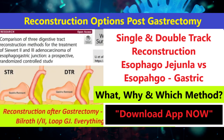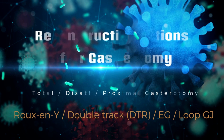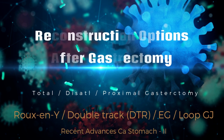In today's video tutorial, we have discussed in detail about different reconstruction methods after gastrectomy. The main reconstruction techniques discussed are Roux-en-Y type reconstruction, esophagogastrostomy, and loop gastrojejunostomy. These reconstruction techniques are required after total, distal, and proximal gastrectomy. We have reviewed the relevant literature regarding these techniques and which technique is to be followed in different circumstances.